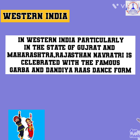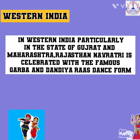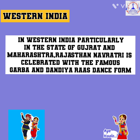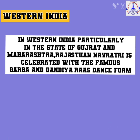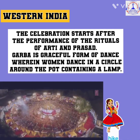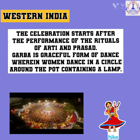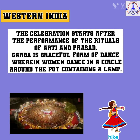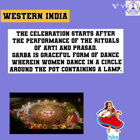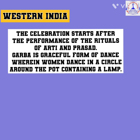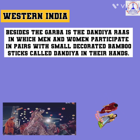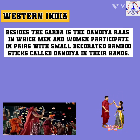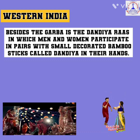In Western India, particularly in the states of Gujarat, Maharashtra, and Rajasthan, Navaratri is celebrated with the famous Garba and Dandia Ras dance forms. The celebration starts after the performance of the ritual of Aarti and Prasad. Garba is a graceful form of dance wherein women dance in a circle around a pot containing a lamp. Besides Garba, there is the Dandia Ras, in which men and women participate in pairs with small decorated bamboo sticks called Dandia in their hands.